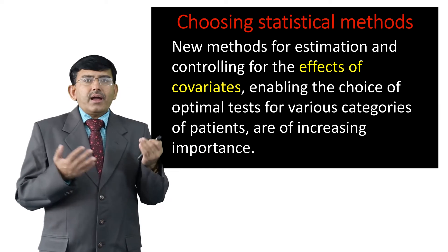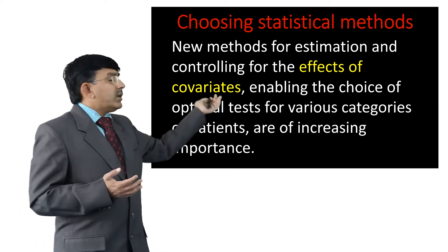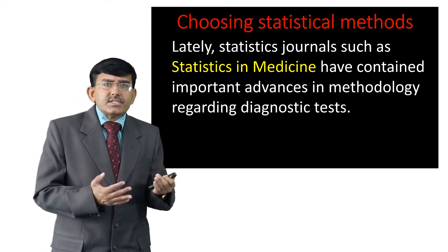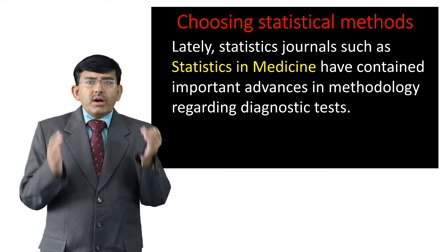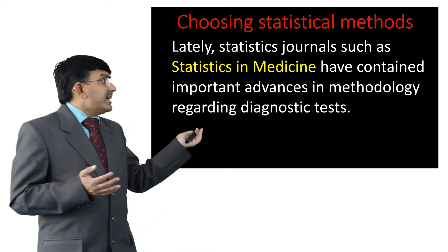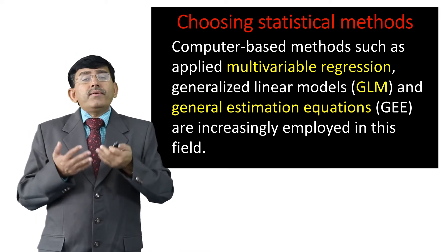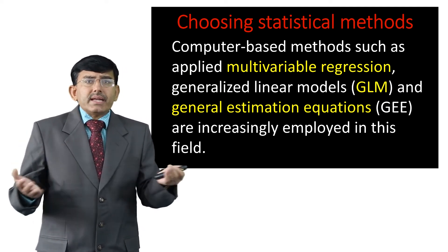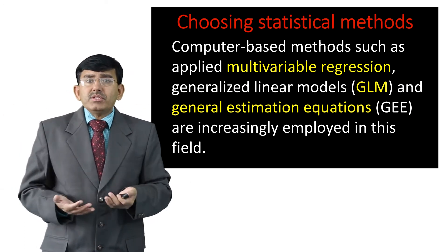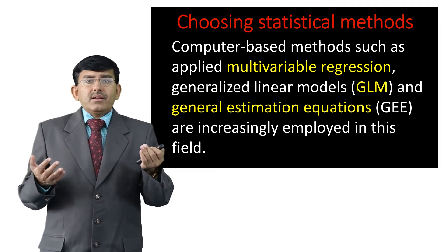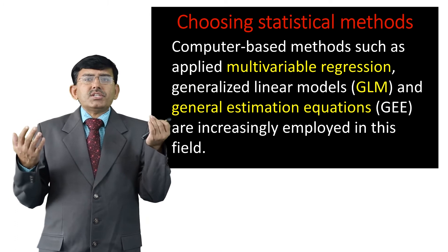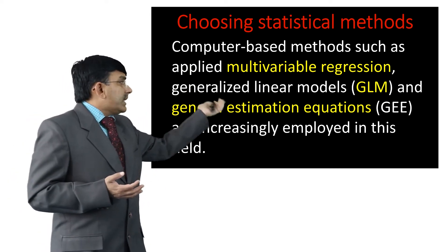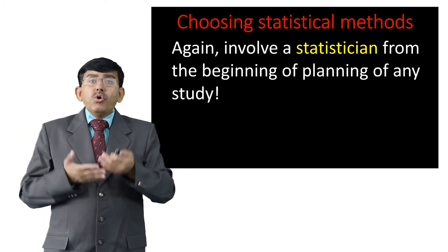New methods for estimation and controlling for the effect of covariates, enabling the choice of optimal tests for various categories of patients, are of increasing importance in mass screening. Statistics journals such as Statistics in Medicine have contained important advances in methodology. Computer-based methods such as multivariable regression, generalized linear models (GLM), and generalized estimating equations (GEE) are increasingly employed to achieve high accuracy and more reliable results.